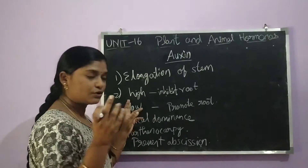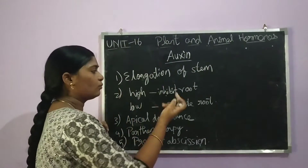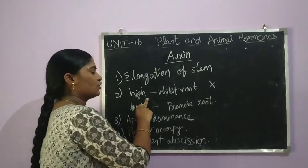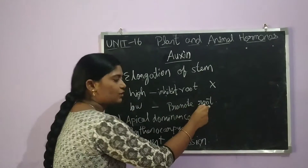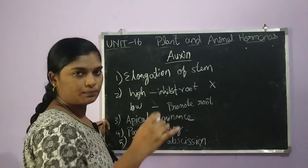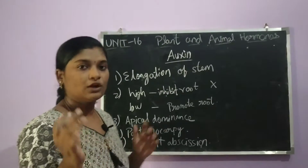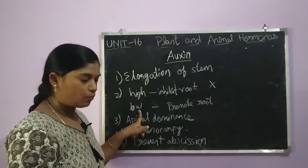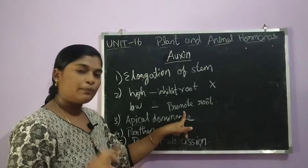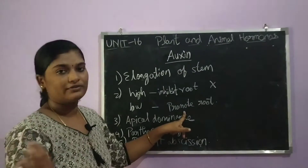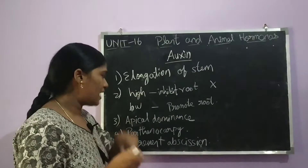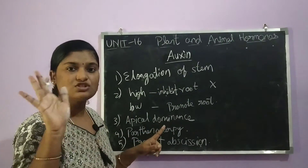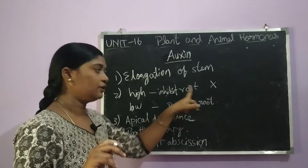The second function relates to roots. Auxin promotes root growth when its concentration is low. When the concentration of auxin is high, it inhibits root formation. So at lower auxin concentrations, root growth is promoted.